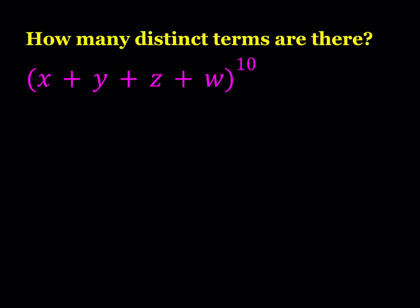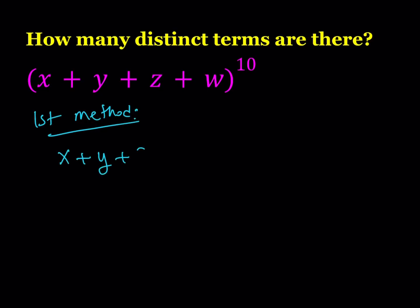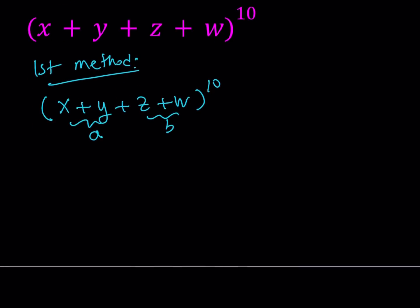For the first method, I'm actually going to turn this into a binomial expansion by using substitution. Let's call this a and let's call this b. So I have four terms, but right now I have two terms, which is nice because we know how to deal with the binomial theorem.